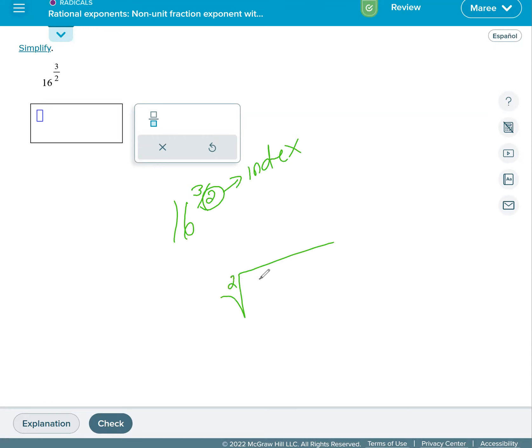When the index is two, we don't actually write that, so we're doing the square root of 16 cubed. So we need to actually simplify this.